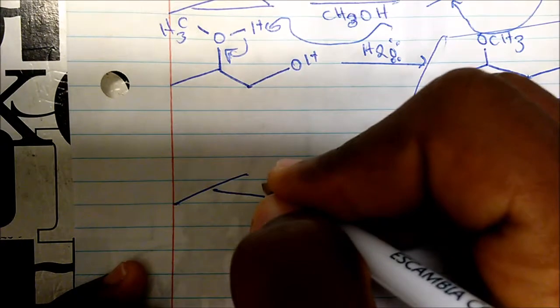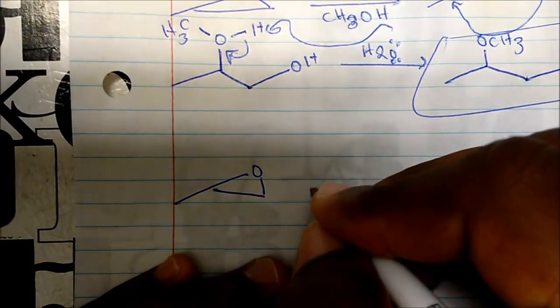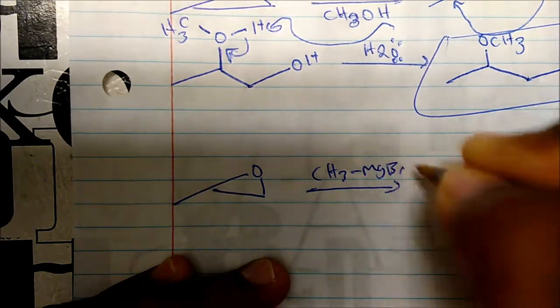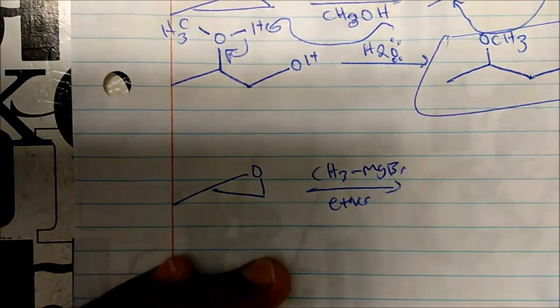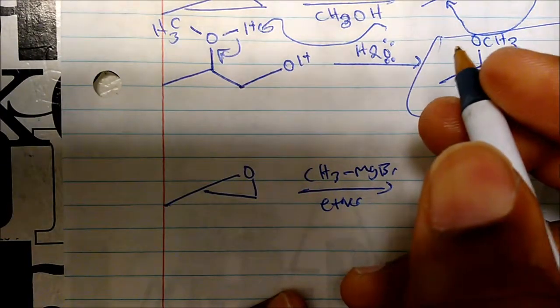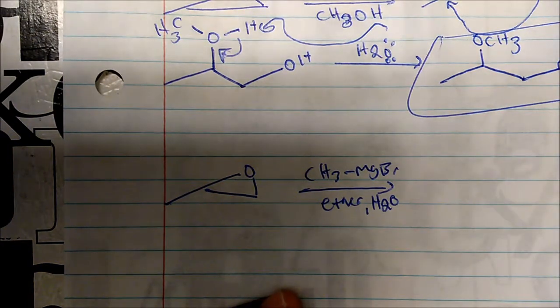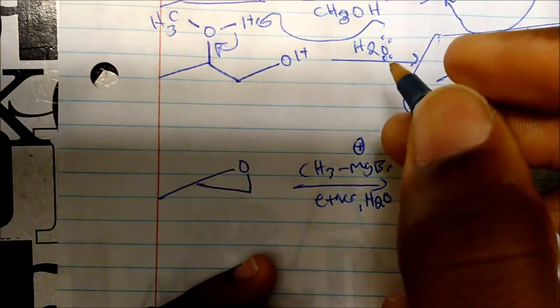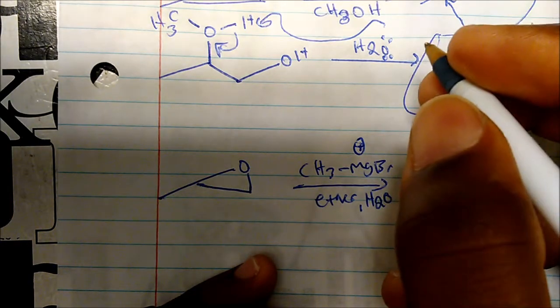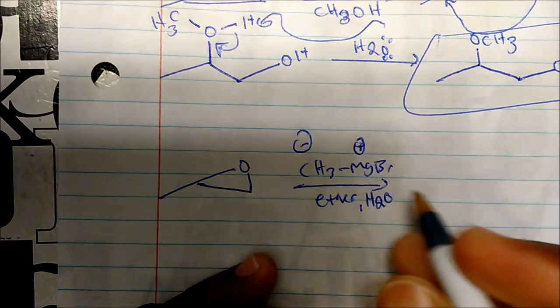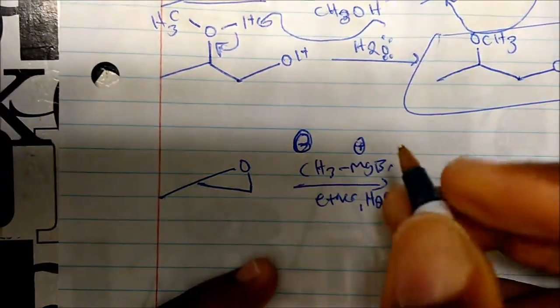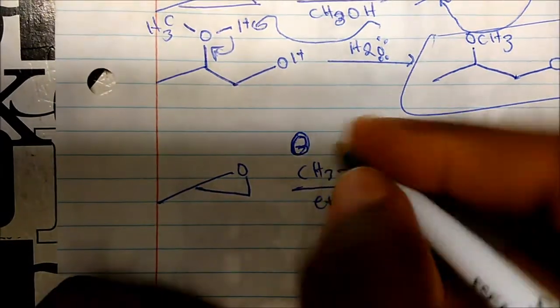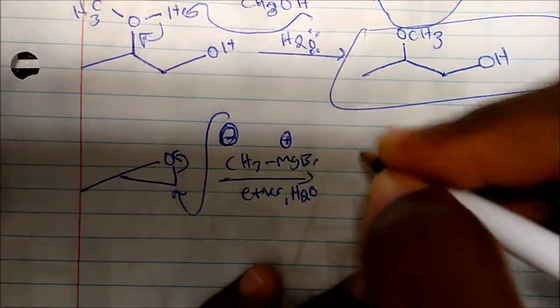Now let's look at epoxides in basic conditions. What if I react this epoxide with methyl magnesium bromide in ether? Remember with Grignard reagents we're in basic conditions — ionic bonds have metals taking +1 formal charges and non-metals taking the minus. So we are not going to attack the more substituted carbon; we're going to attack the less substituted carbon and break the bond between that carbon and oxygen.